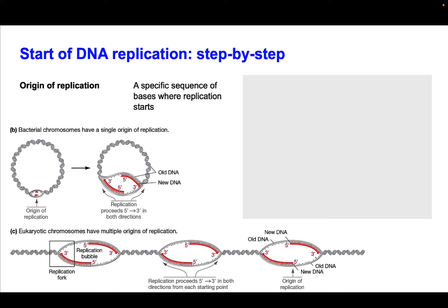Eukaryotic chromosomes are much bigger. As a scale comparison, E. coli has 4.2 million base pairs and takes about 20 minutes to duplicate its DNA, while humans have about 3 billion base pairs and it takes about 24 hours to duplicate. But humans wouldn't actually be able to duplicate this quickly unless they had multiple origins of replication.